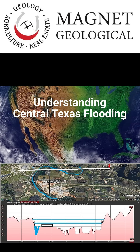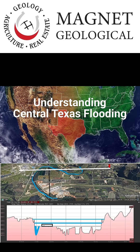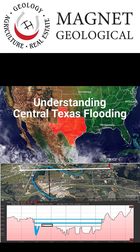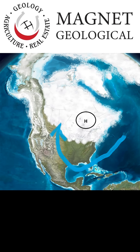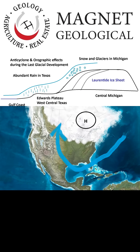To understand Texas flooding, you need to understand some basic earth history and geology. It's important for the real estate industry. 20,000 years ago we had glacial maximum conditions, and likely a clockwise atmospheric spin around a central high-pressure system. This system pulled moisture from the Atlantic and Gulf, and as it rose, it condensed to form rain in Texas and snow on the glaciers.